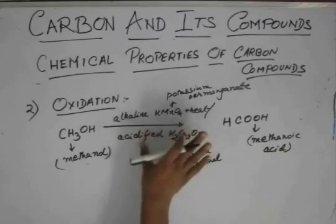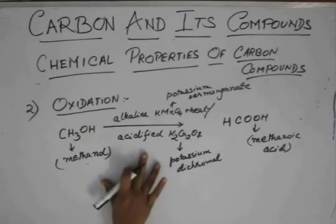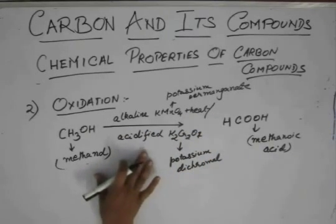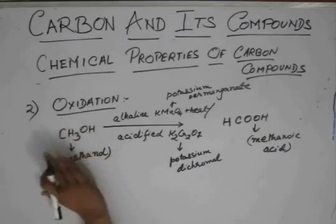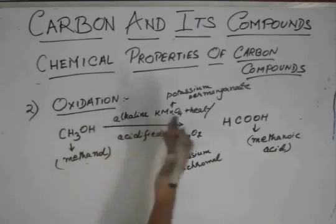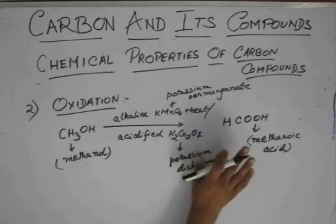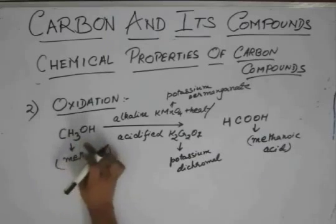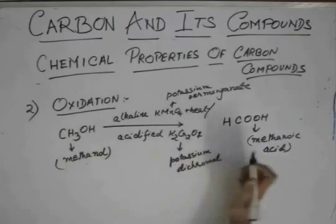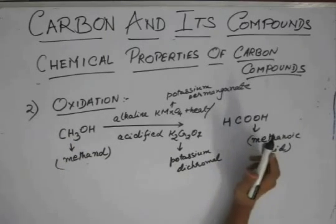Now, these alkaline KMnO4 and acidic K2Cr2O7, they do not disturb the number of carbon atoms, because they don't contain any carbon atoms. So, they can't add or take away carbon atoms. They only add another oxygen atom in the formula.